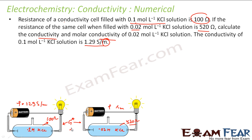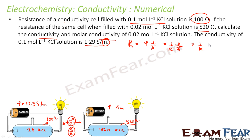The cell constant — that is L by A — will be the same for both cells. So if you can find the cell constant for cell 1 using these values, the same cell constant can be used in cell 2. I know that resistance is rho times L by A, which is also 1 by conductivity times G-star, because G-star is nothing but L by A — the cell constant.